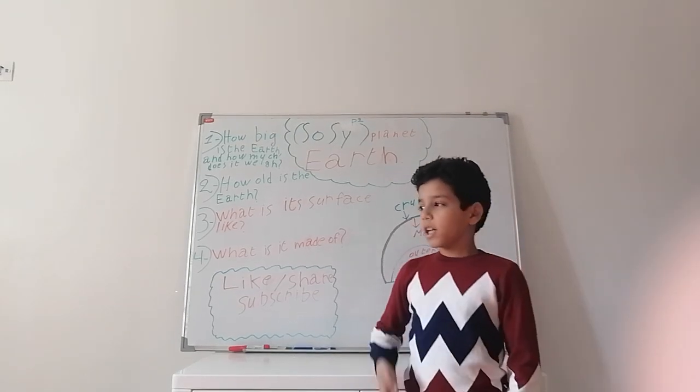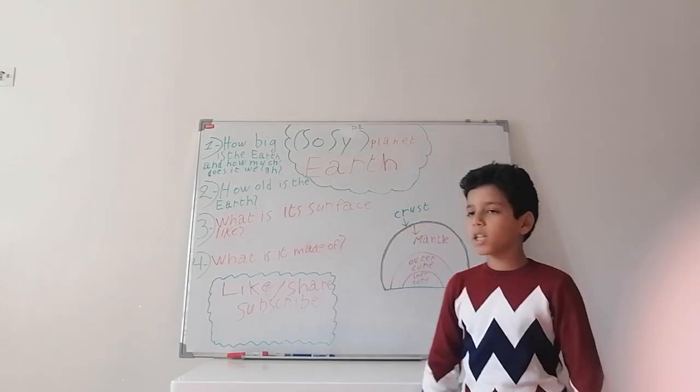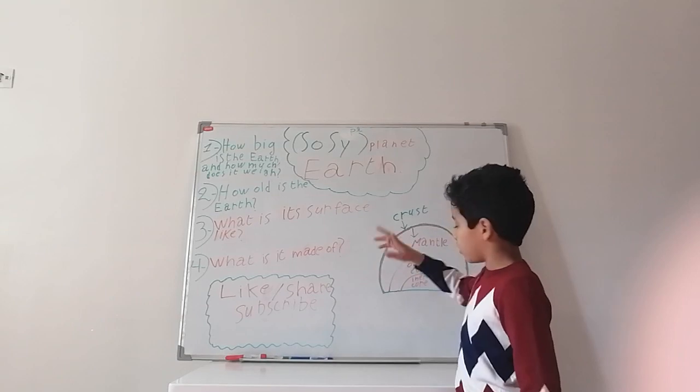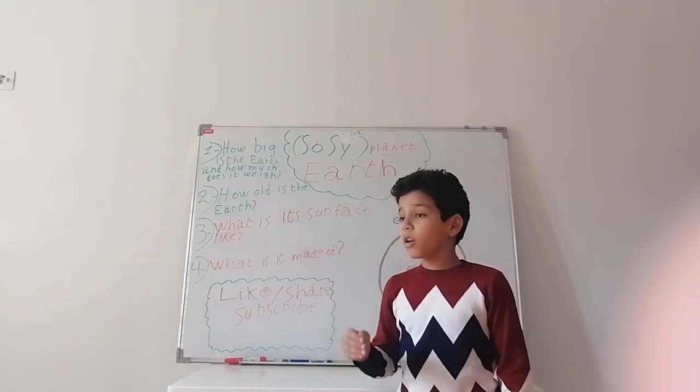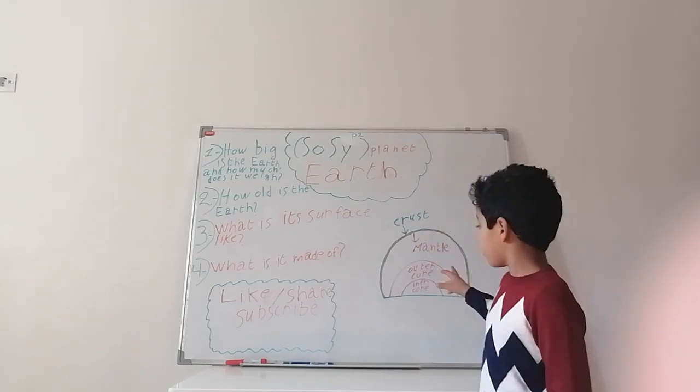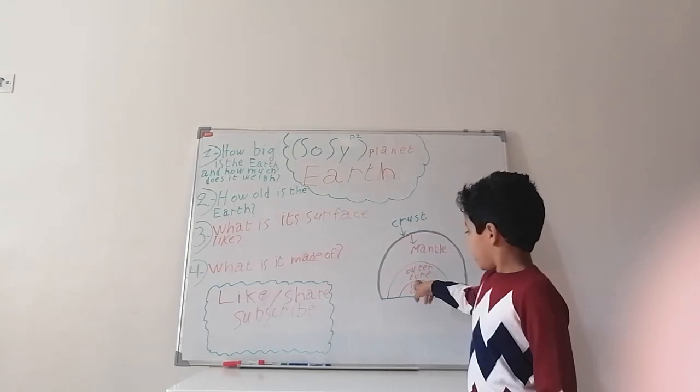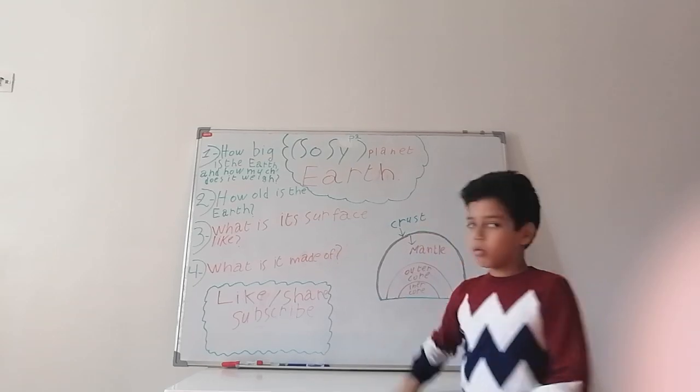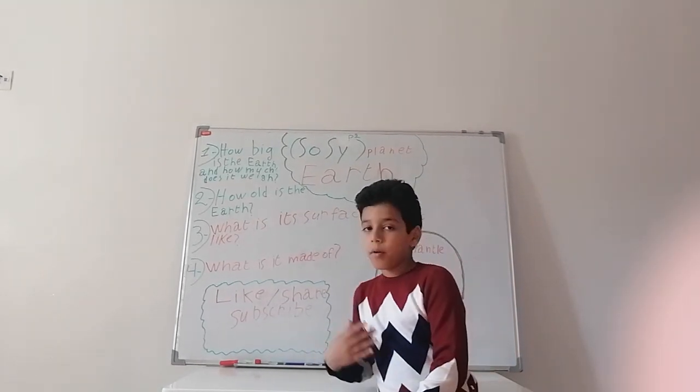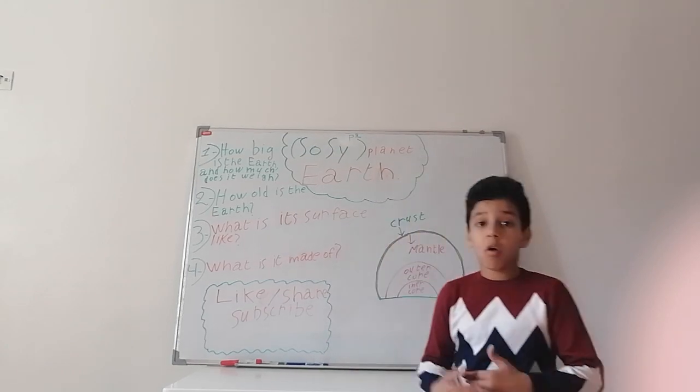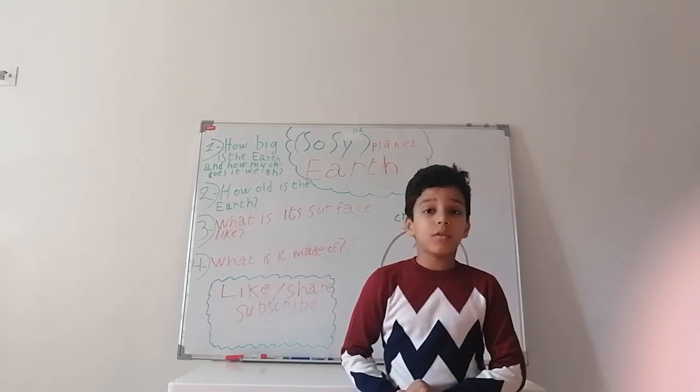From the mantle to the outer core, it's like 2,900 kilometers from here to here. And from the outer core to the inner core, it's 5,100 kilometers from here to here. The inner core and outer core are usually the places where we find metal, lava, magma, iron, and all that stuff.